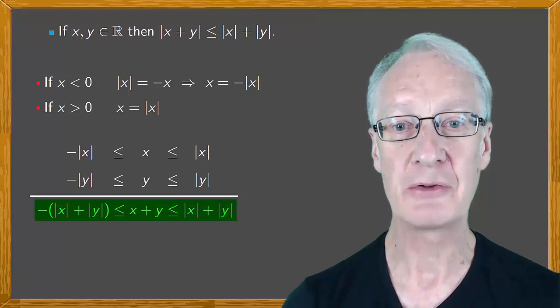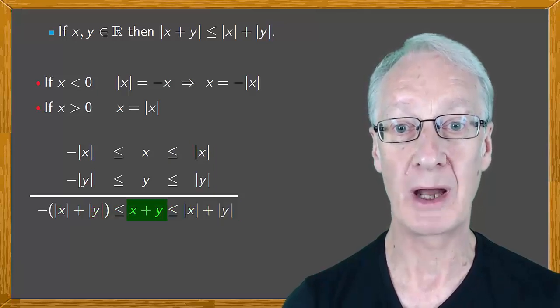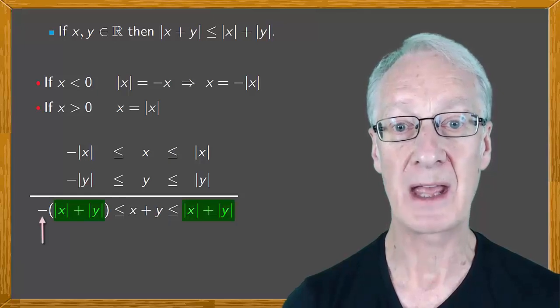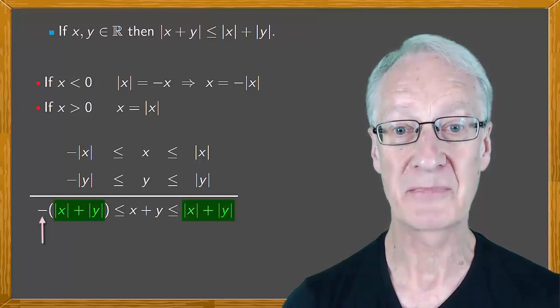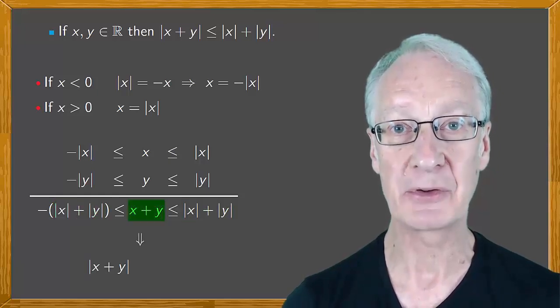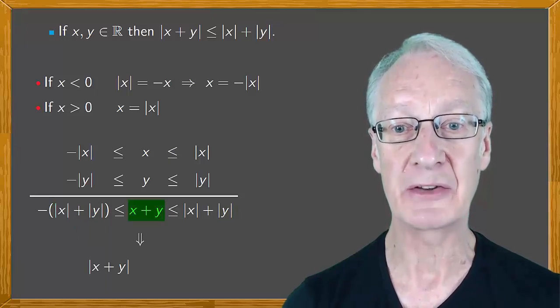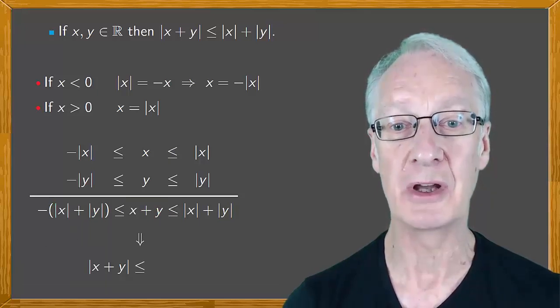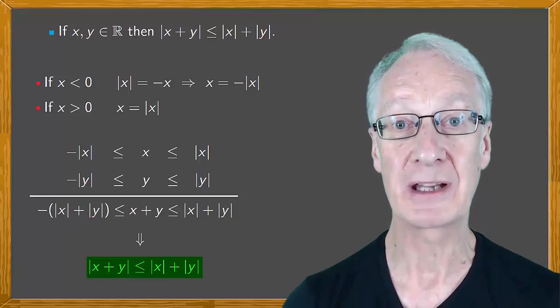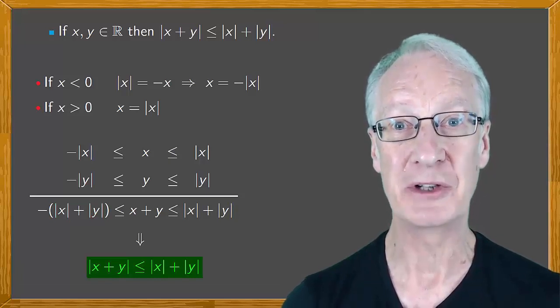So, we've shown that this number, x plus y, is between minus that number and the number. Finally, we obtain that the absolute value of the number is less than or equal to the number. And we have the triangle inequality for real numbers.